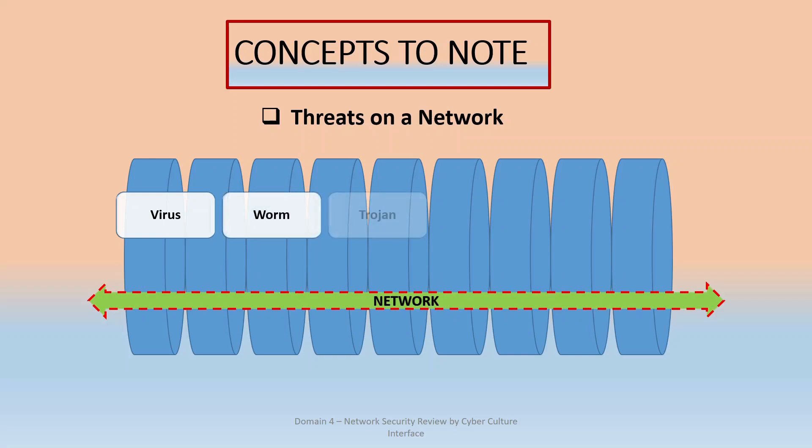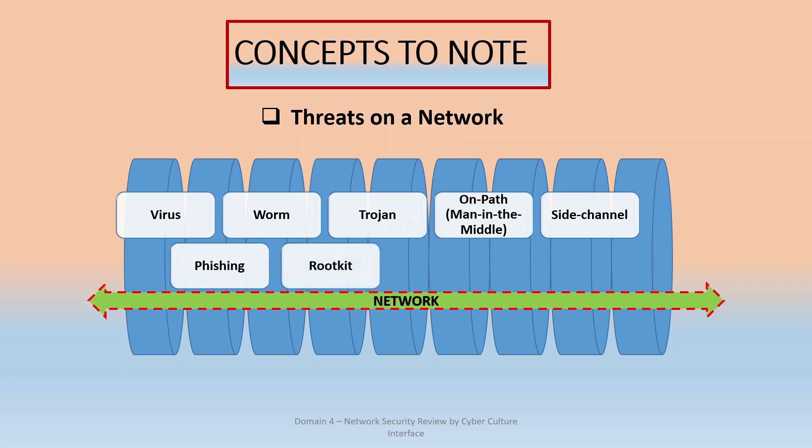It can suddenly become something that is attacking your system. We have worms, Trojans, man-in-the-middle, side channel, phishing threats, rootkits, adware, spyware, and malware. Remember, these are threats, but they are also carrying the potential of becoming an attack at any point in time. When you have these within your network, that means there's been an intrusion and you need to take care of it as soon as possible.